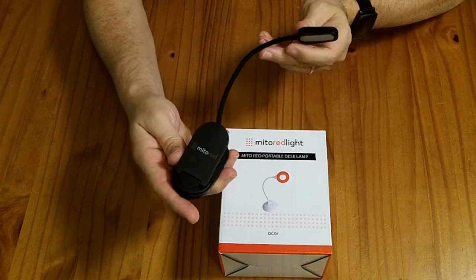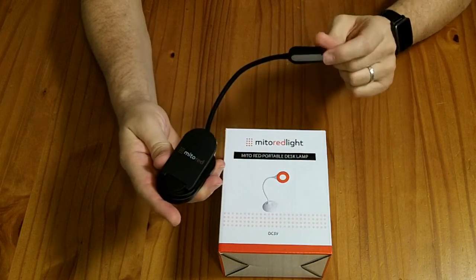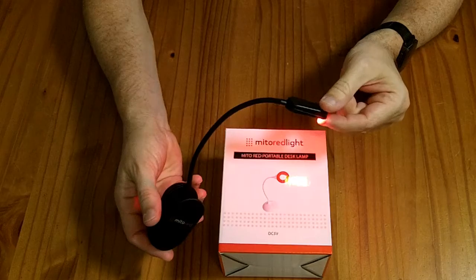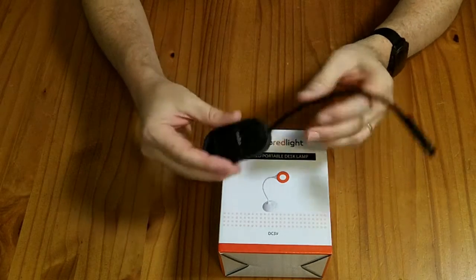I currently own the Mido Red Light clip-on book lamp and it has three brightness settings. And I'm using this guy for astronomy.